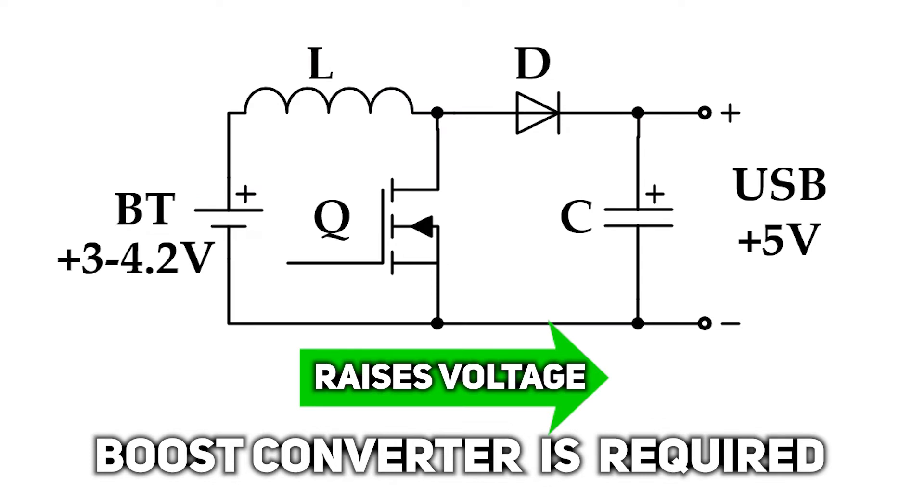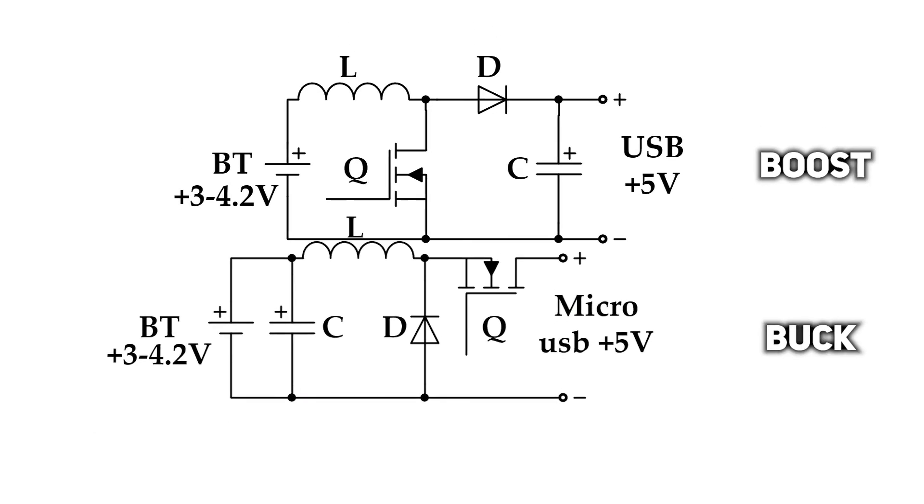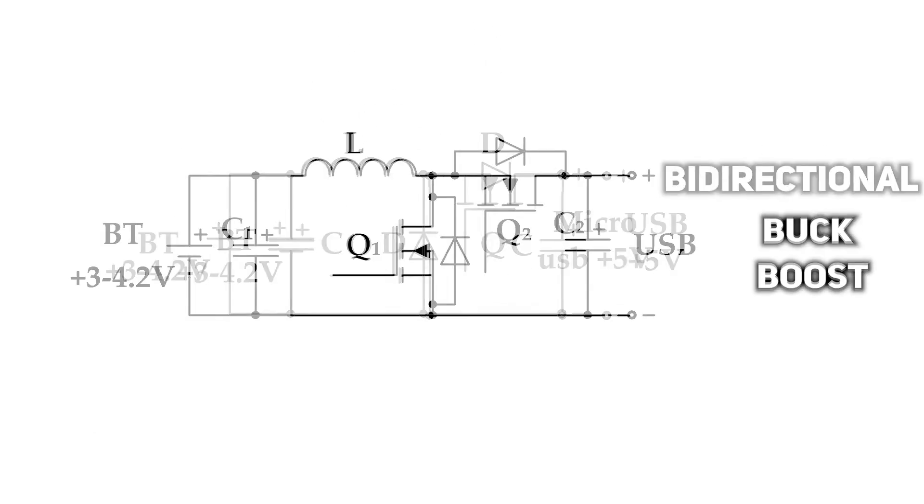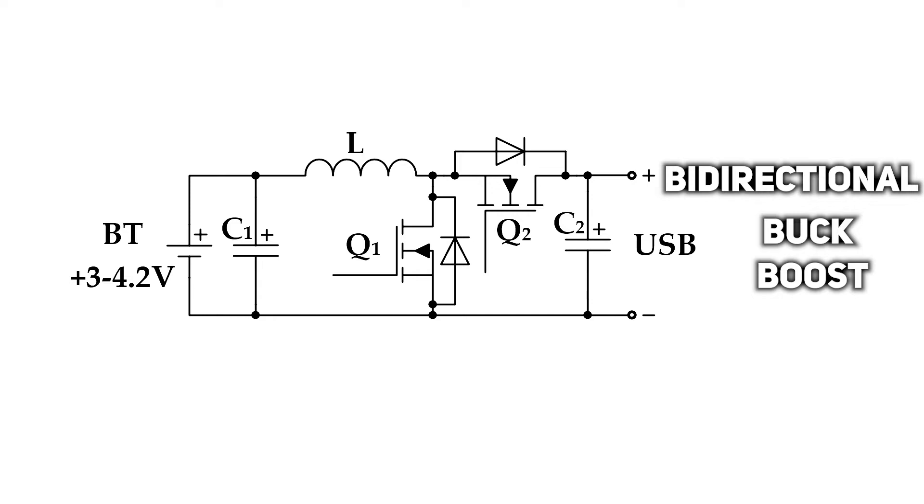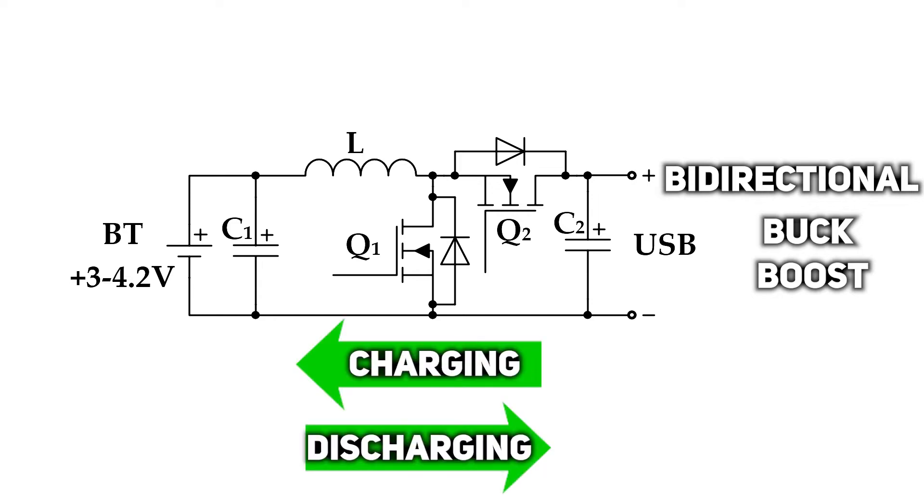However, these two circuits can be combined together creating a bidirectional buck boost converter, which fully satisfies functionality needs. It can work in both directions, charging and discharging the battery, providing the required voltage levels. And I believe such circuit is used in this IC, even if they don't show it.